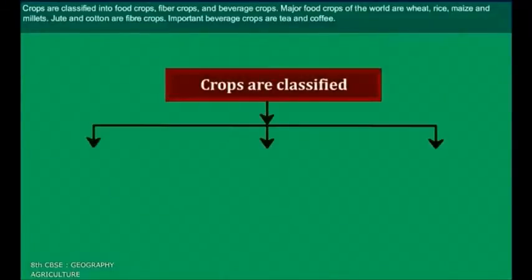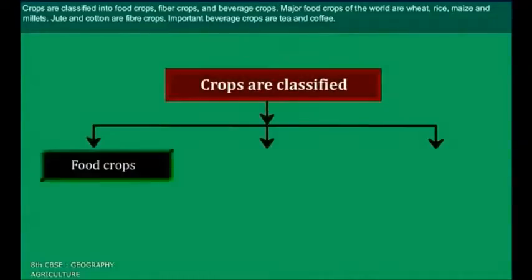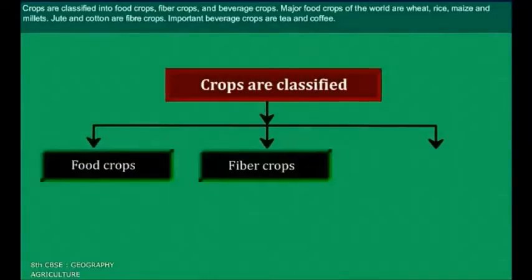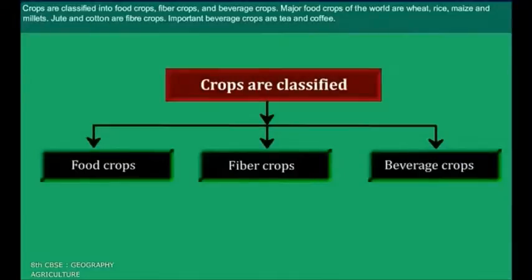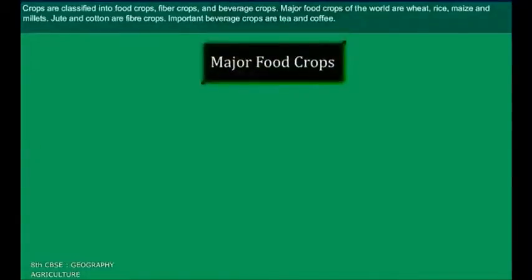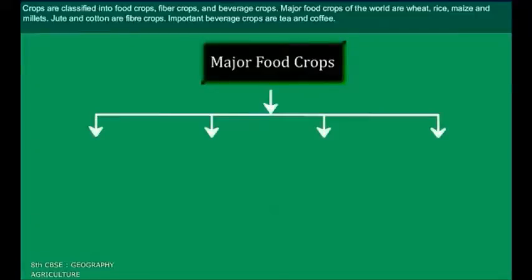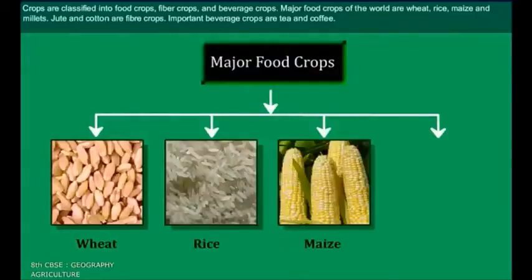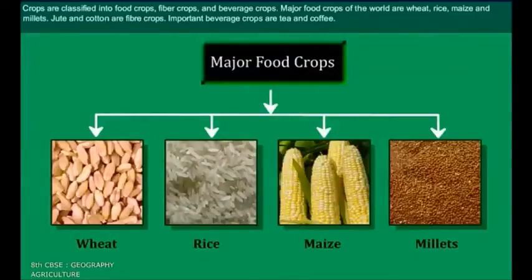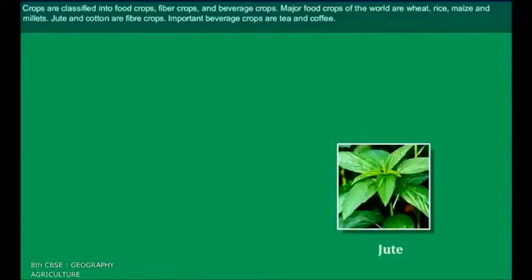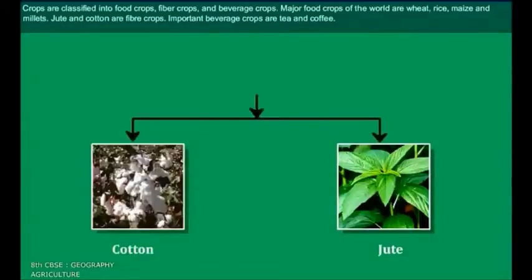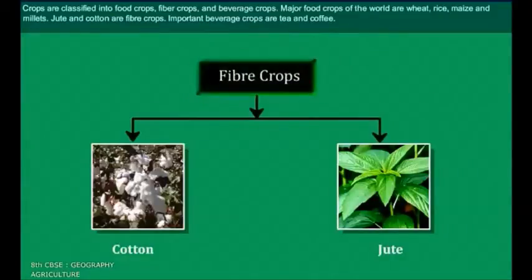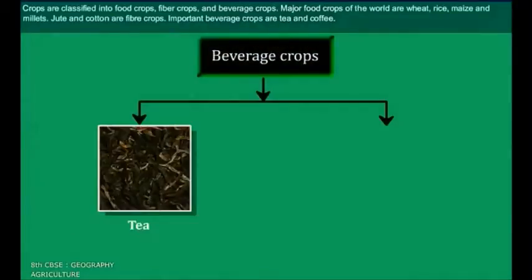Crops are classified into food crops, fiber crops, and beverage crops. Major food crops of the world are wheat, rice, maize and millets. Jute and cotton are fiber crops. Important beverage crops are tea and coffee.